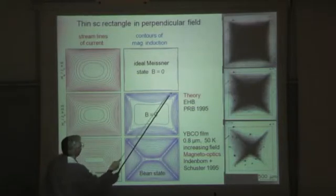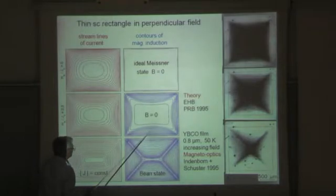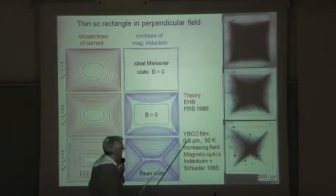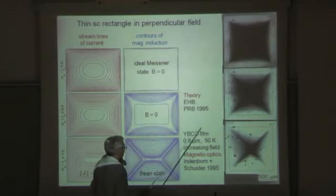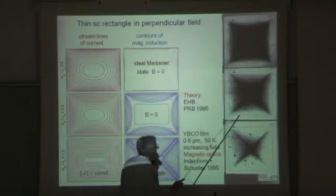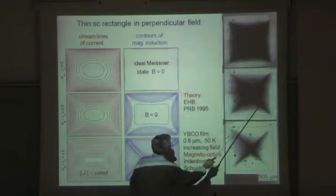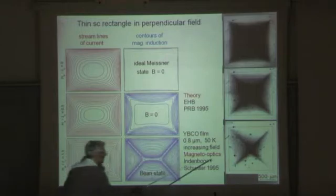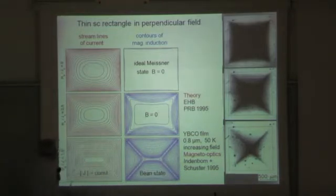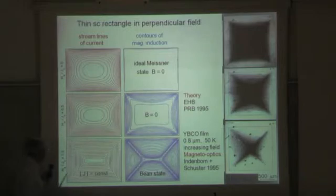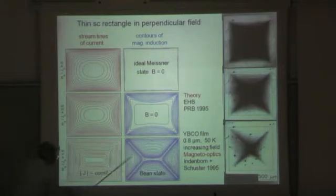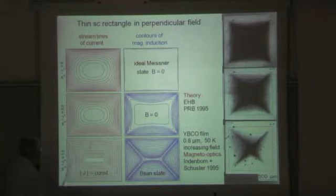But then when you increase the applied field more and more, then magnetic field will penetrate. This is the contour lines of the magnetic field. And you see in this experiment, at the yttrium barium copper oxide film, this magneto-optics, you see the magnetic field indeed penetrates from the sides here. And then when the applied field is large enough, when it has penetrated to the middle, then the current flows on concentric rectangles. This is just the Bean model, namely the current density is constant everywhere, but the direction changes by 90 degrees when you go around.